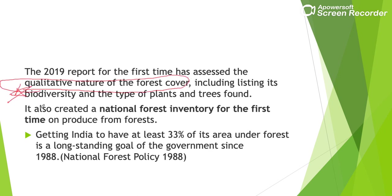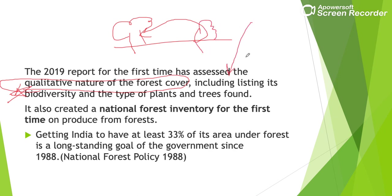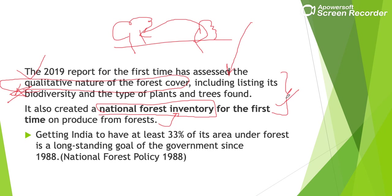The qualitative nature of forest cover means that for any forest, information about its biodiversity and types of plants and trees is also provided in this report. Additionally, it created a National Forest Inventory — meaning an assessment of the economic value of forest products. These are the two major new inclusions in the 2019 report.